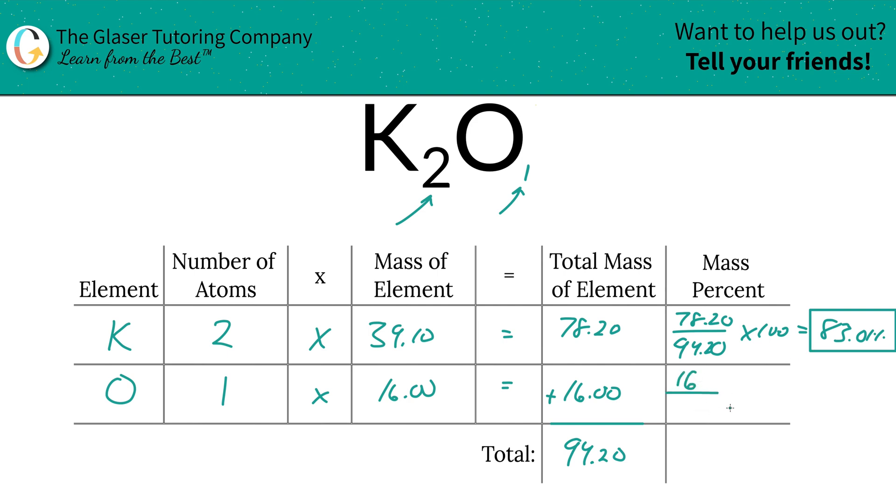Same thing for oxygen. Take the total mass of oxygen, 16 divided by the 94.20. Don't worry about the sig figs. Don't forget to multiply it by 100 though, like I almost did. And then here's going to be 16.99%. And what should happen is these two should add up to 100%. So that's a quick way to check yourself before you wreck yourself.